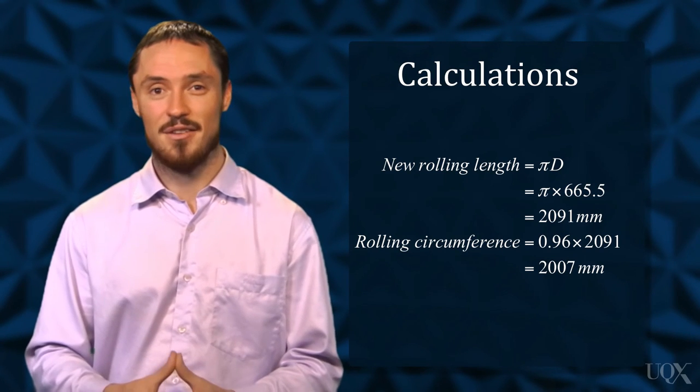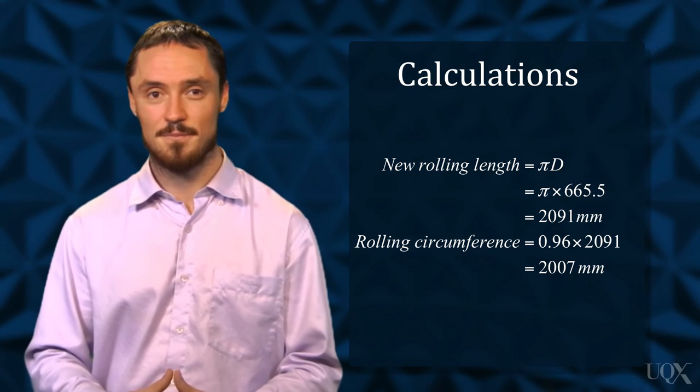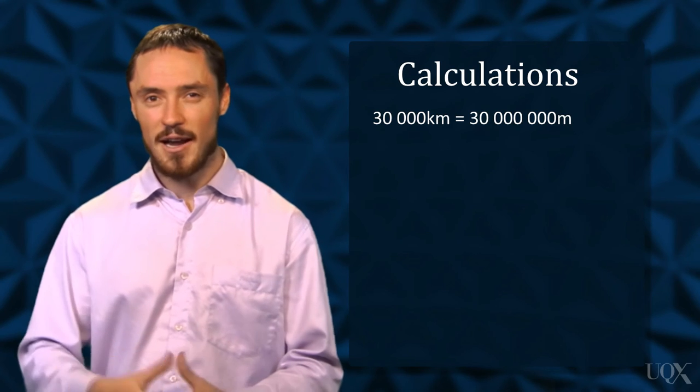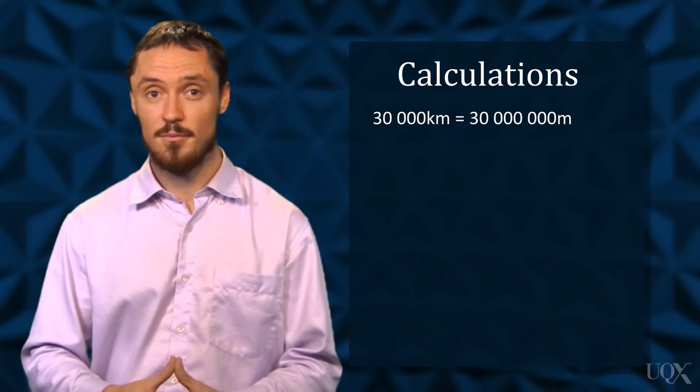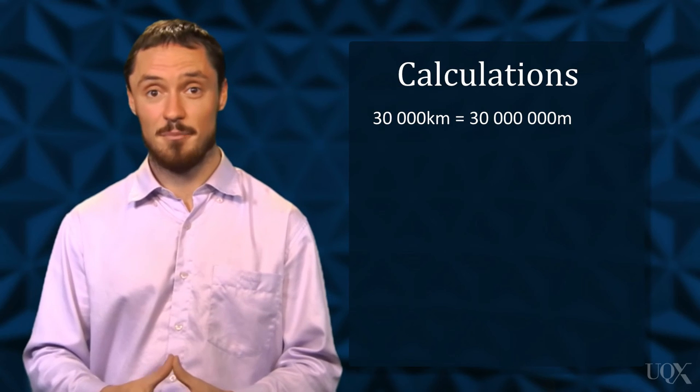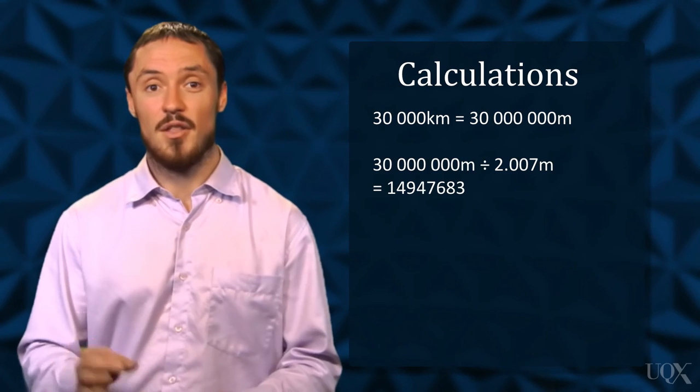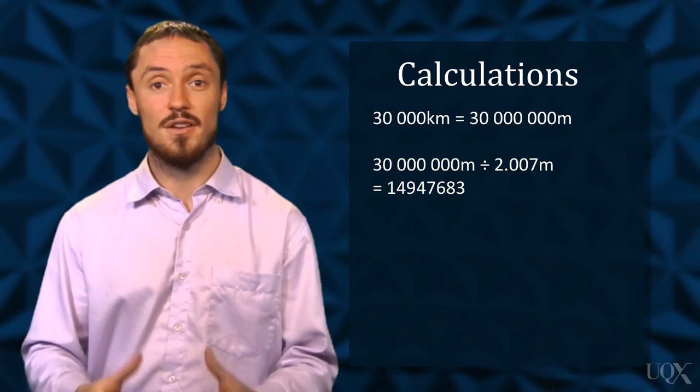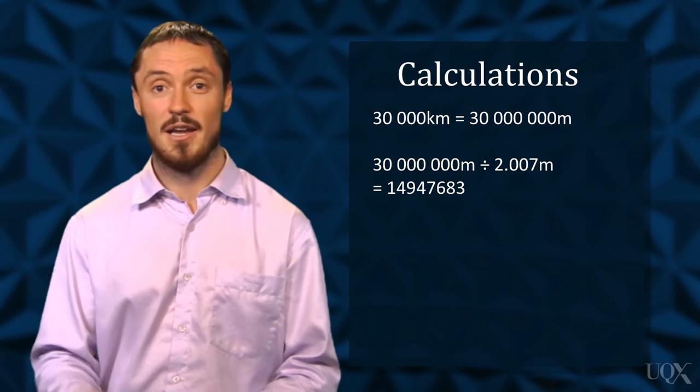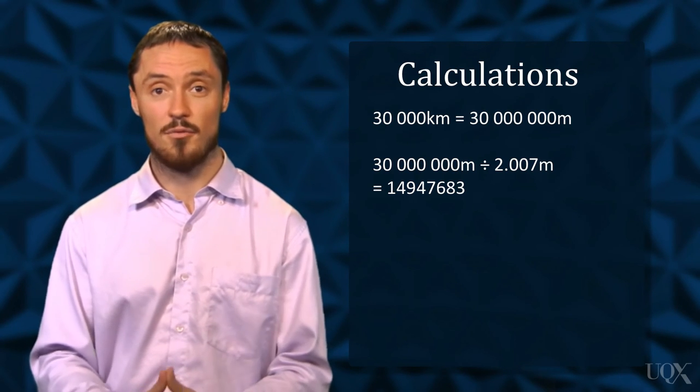Let's use metres as the distance in our calculations here. If a tyre lasts 30,000 kilometres, this converts to 30 million metres. The number of revolutions is the total distance travelled by the tyre divided by the distance travelled through one revolution. 30 million metres divided by 2.007 metres per revolution equals 14,947,683 complete revolutions.